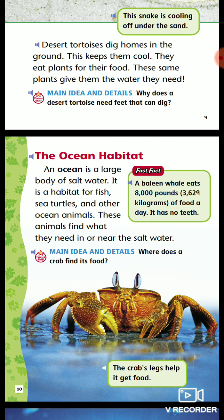The Ocean Habitat. An ocean is a large body of salt water. It is a habitat for fish, sea turtles, and other ocean animals. These animals find what they need in or near the salt water.